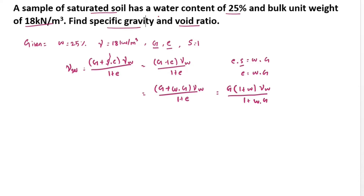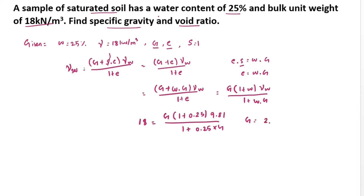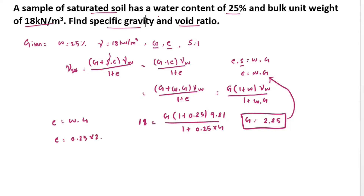Now substituting all values: gamma saturation equals 18, equals G into (1 plus 0.25) into gamma W which is 9.81, divided by 1 plus 0.25 into G. Solving this, we get G equal to 2.25. Then E equals W into G equals 0.25 into 2.25, giving E equal to 0.56.